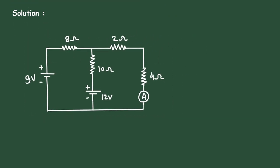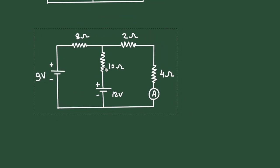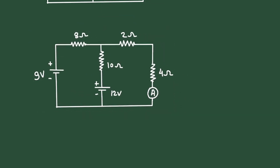First of all, we can see this 2 Ohm and 4 Ohm are connected in series, so we can make a single resistor of 6 Ohm. Let's erase them — this will be 4 plus 2, that is 6 Ohm.